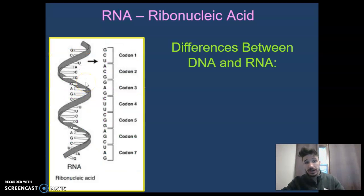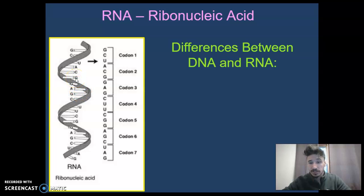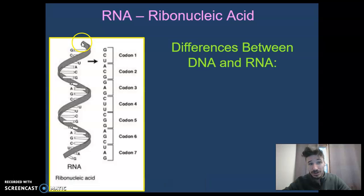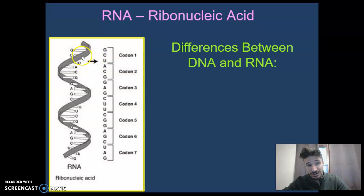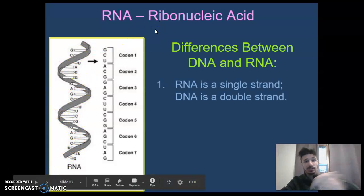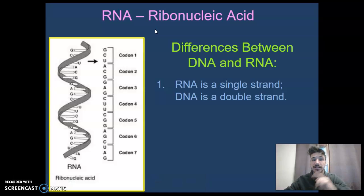Let's talk about RNA, or ribonucleic acid, and the differences between DNA and RNA. If you're familiar with DNA, you should be able to tell that RNA looks different. The first thing we notice is that there are U's instead of T's — uracils, another nitrogen base, instead of thymine. Also, RNA is single-stranded, not double-stranded like DNA.